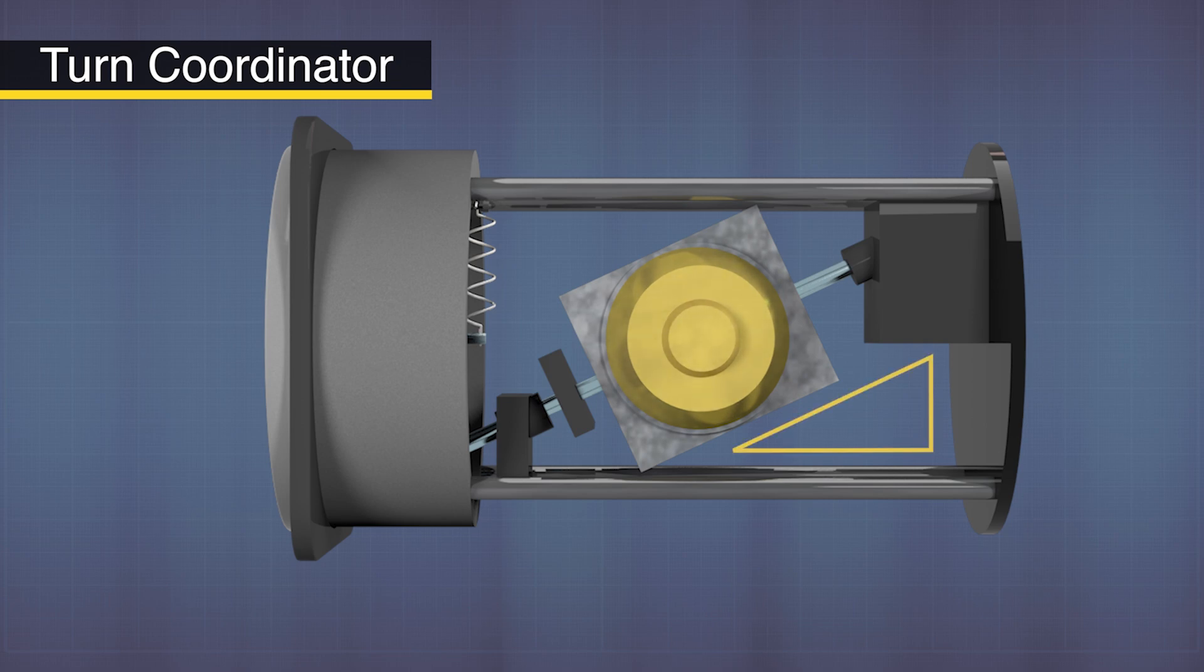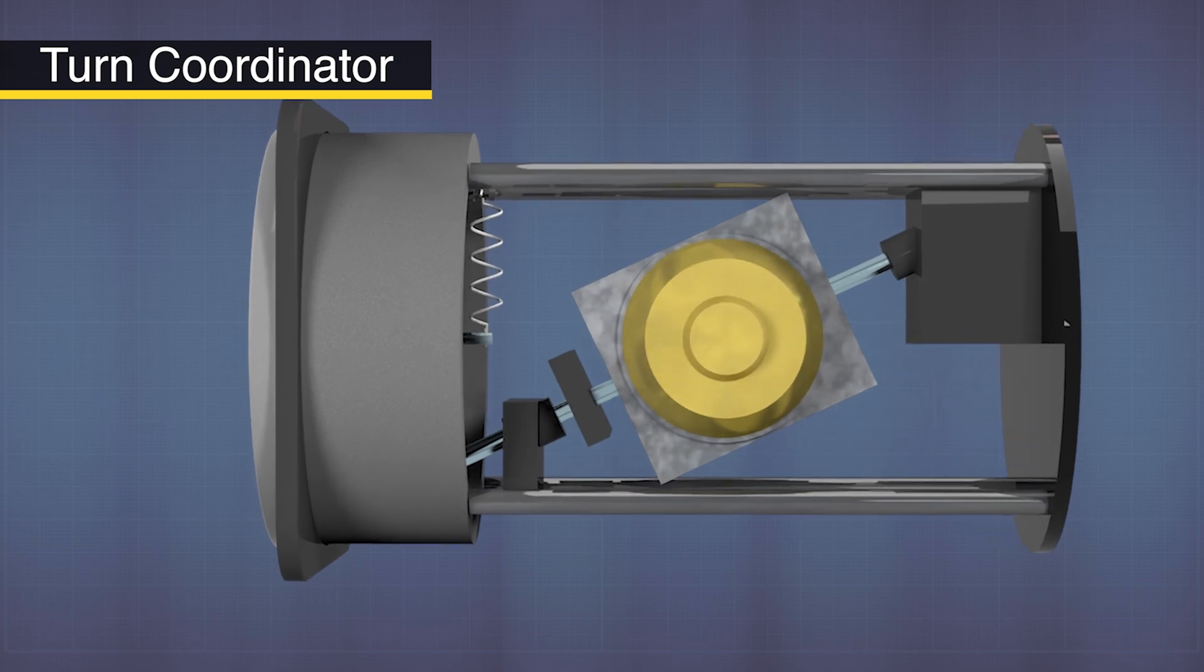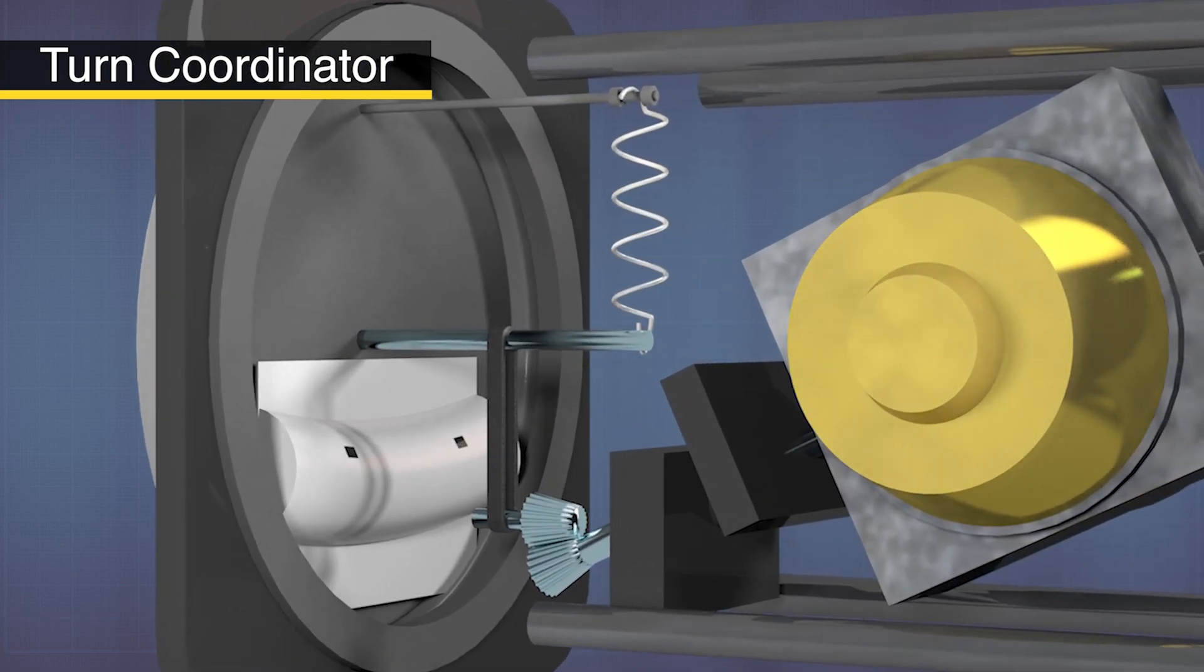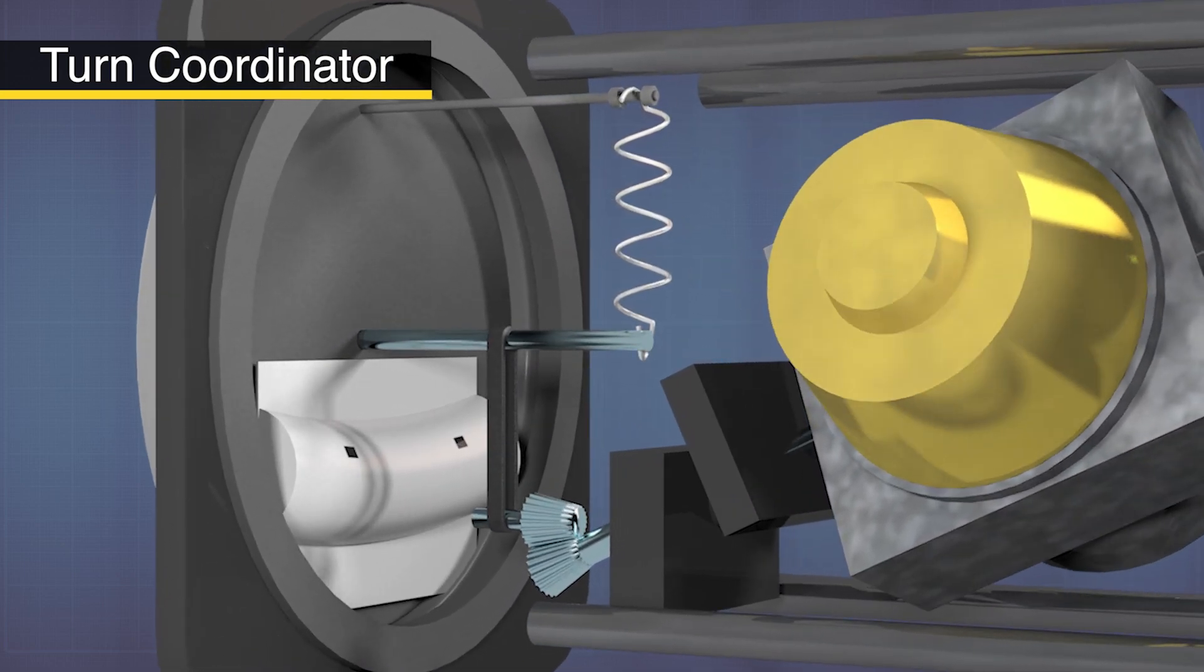The turn coordinator's canted gyro is attached to the miniature airplane, where a spring holds it level until the forces in the turn cause it to bank.